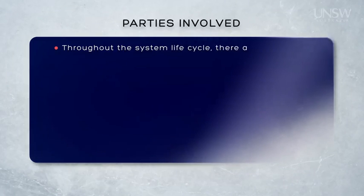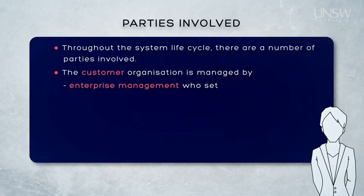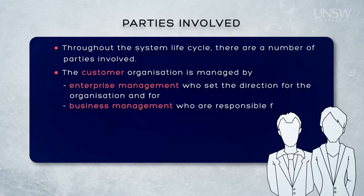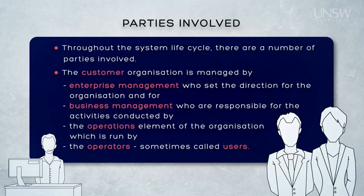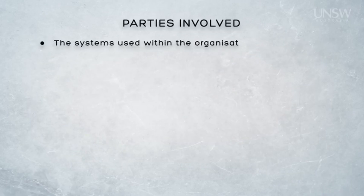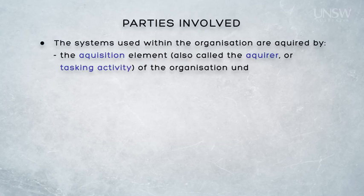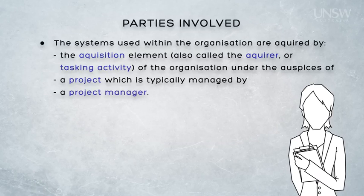Throughout the system life cycle, there are a number of parties involved. First, there's the customer organisation. They're managed by enterprise management, who set the direction for the organisation, and pass the tasks to business management, who are responsible for the activities that are conducted by the operations element of the organisation, run by the operators, and sometimes called the users. The systems used within the organisation are acquired by an acquisition element, also called the acquirer, or in some standards the tasking activity. They belong to the organisation and they work under the auspices of a project manager who runs a project.